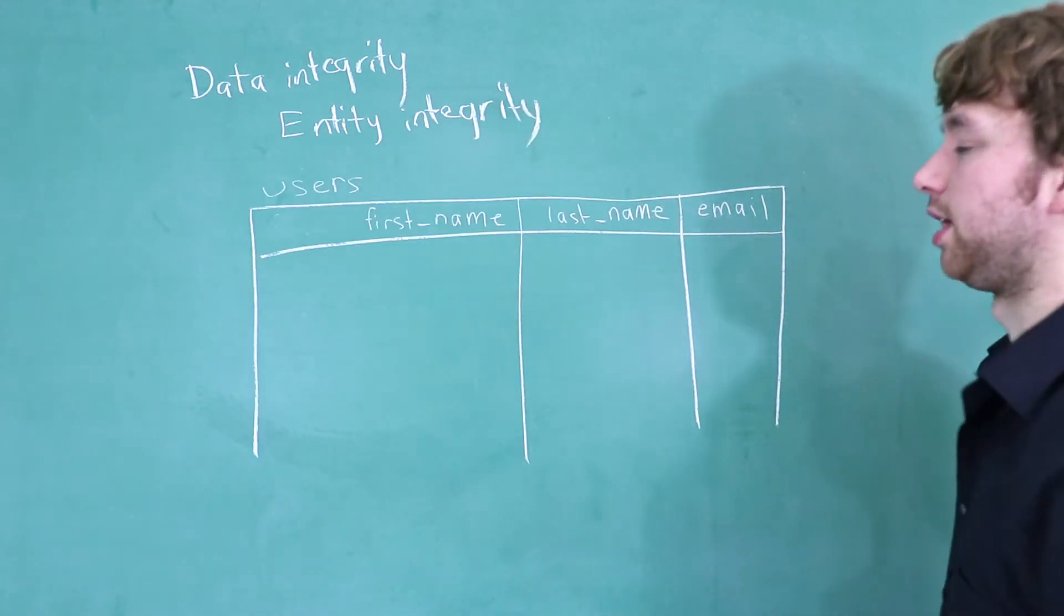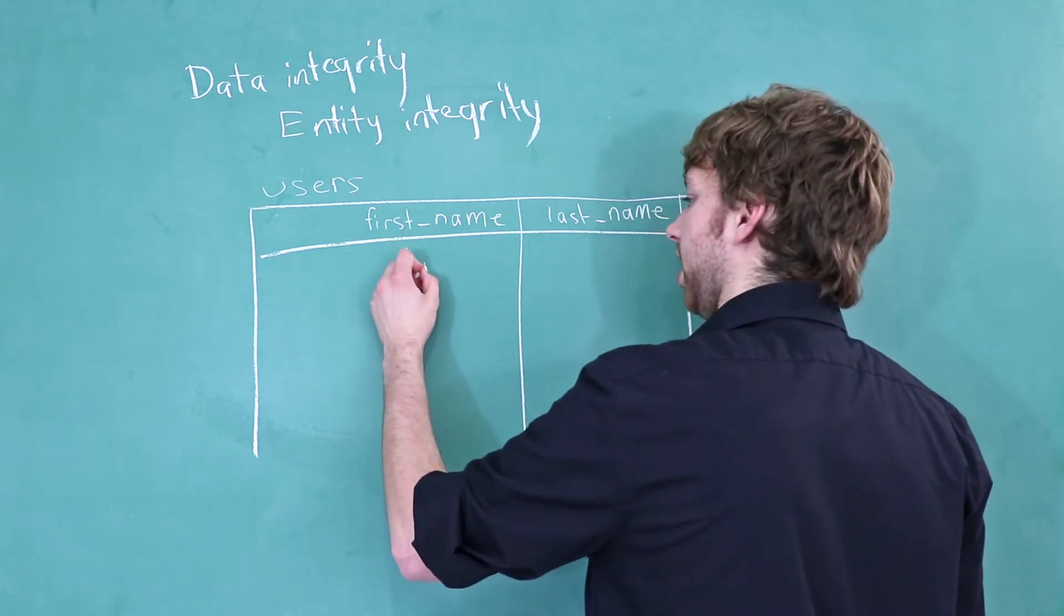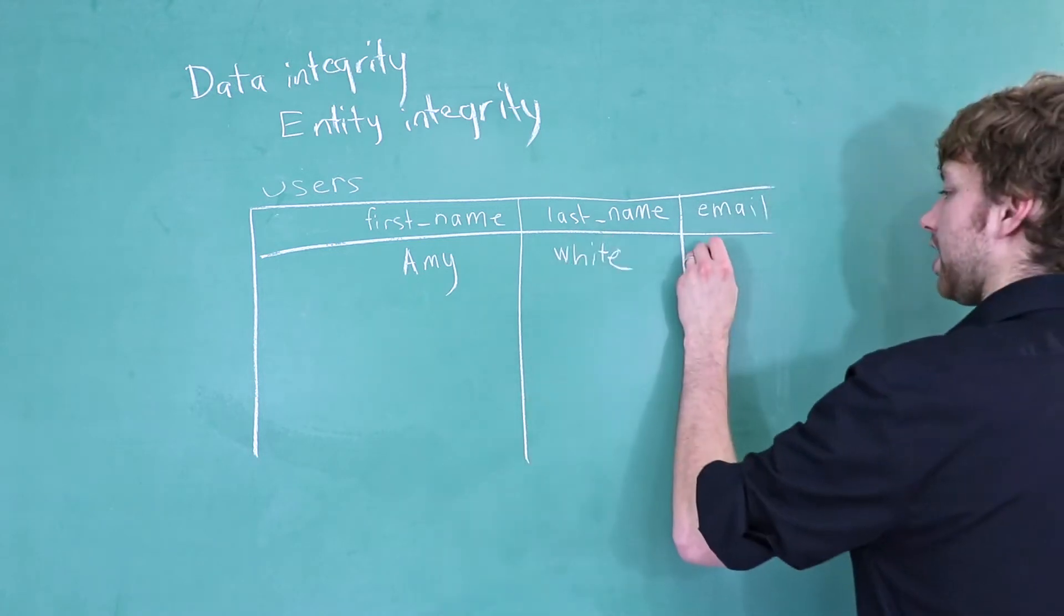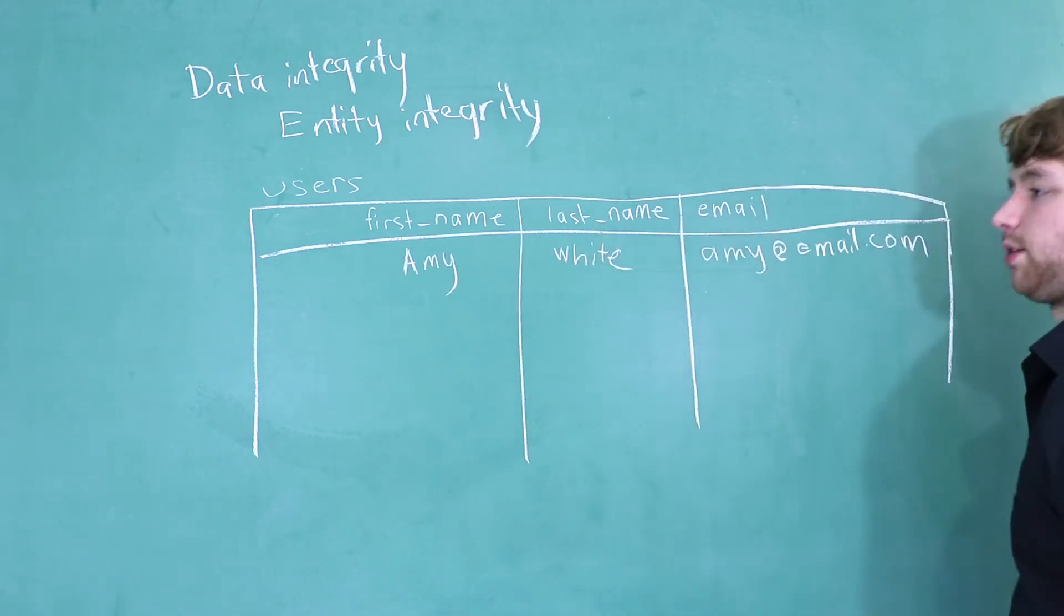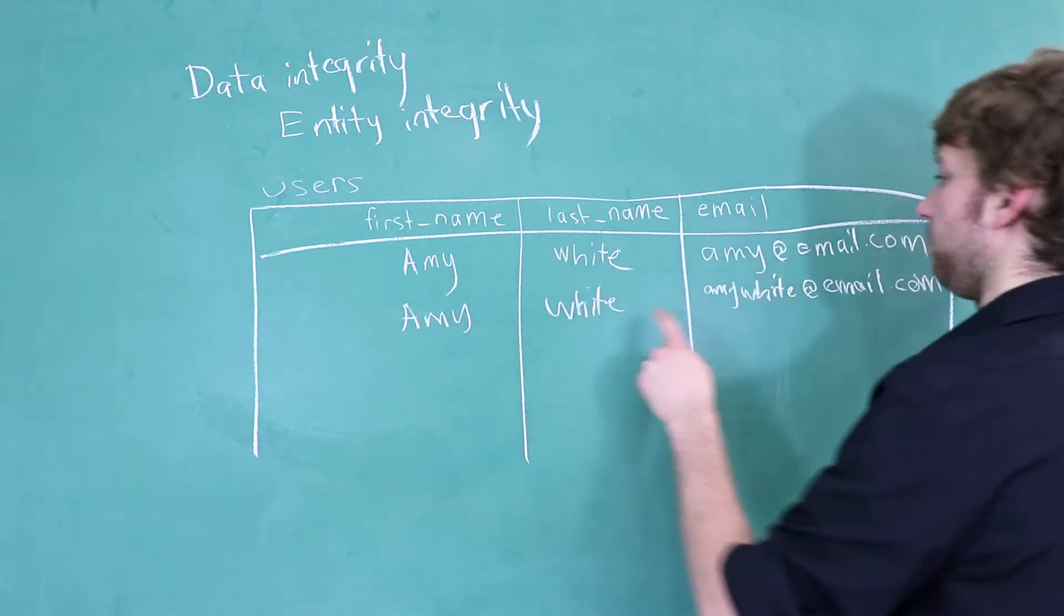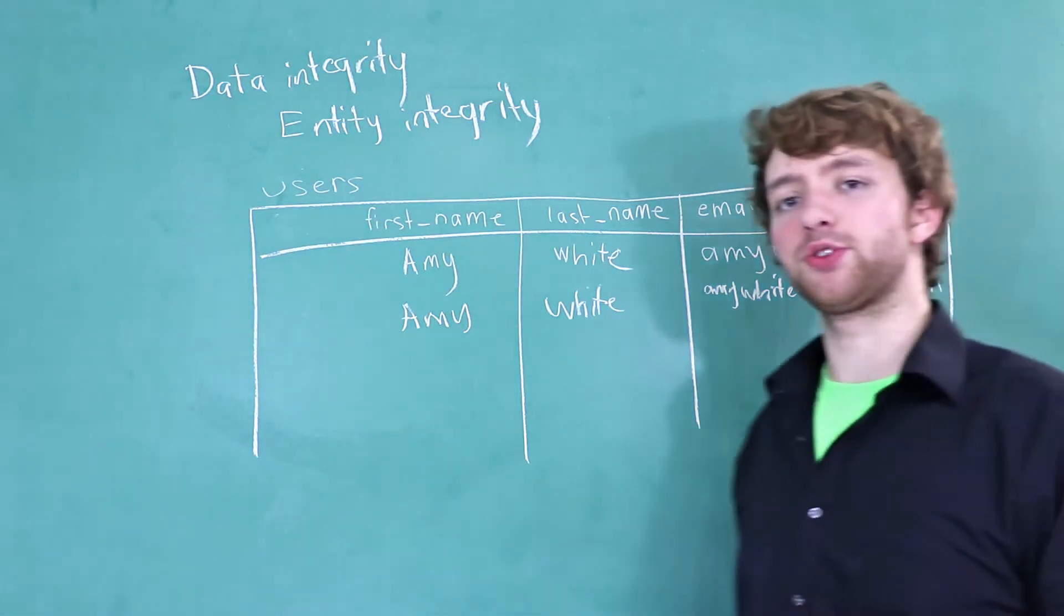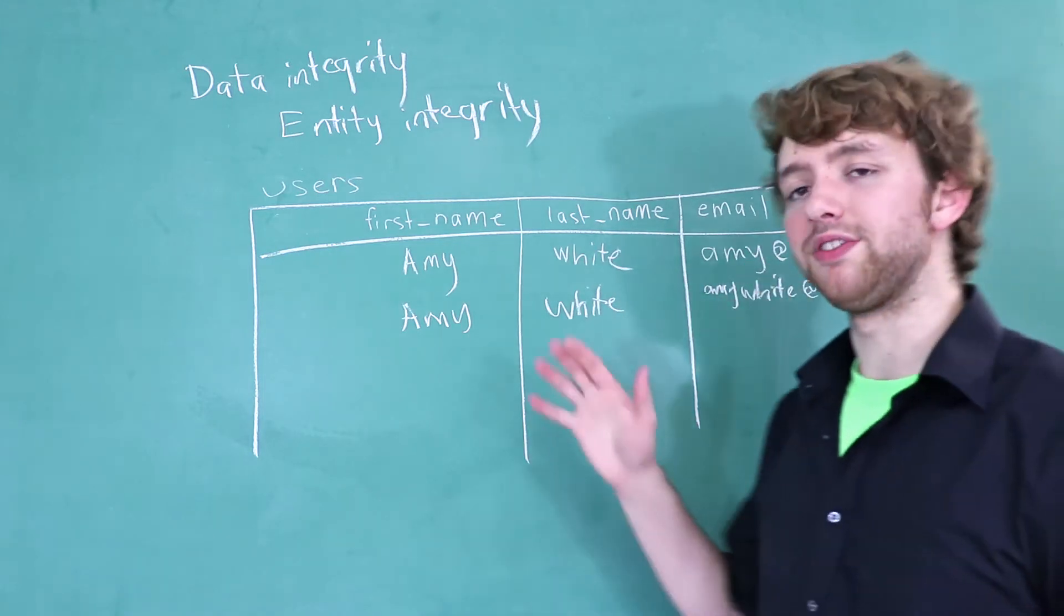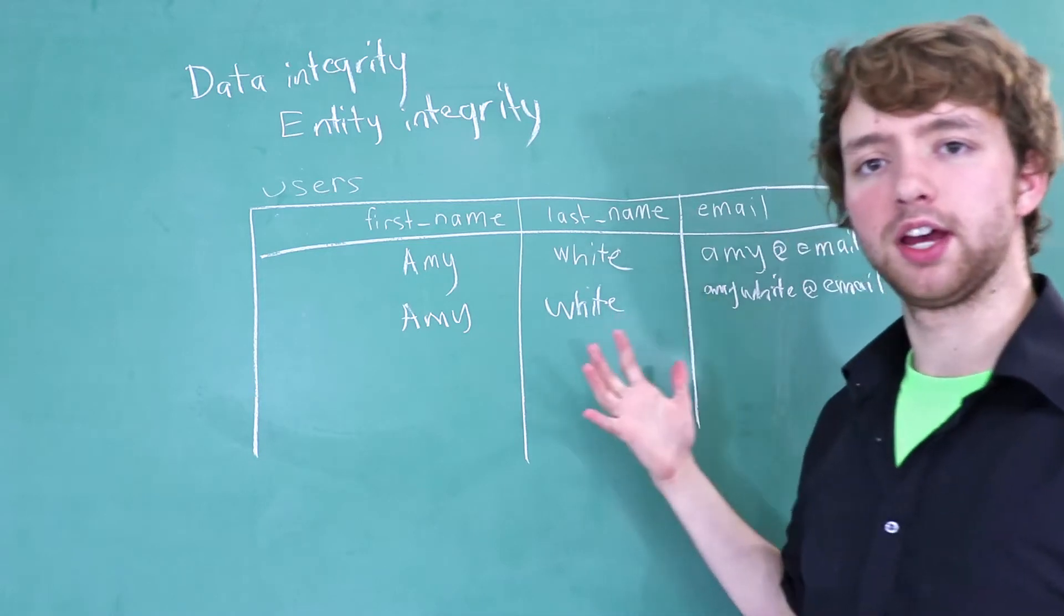First off, let me show you a bad example of a database table. Here is an example table for users. Let's throw some data in here. Let's say we have an Amy. We'll give her the last name White and we'll say her email is amy@email.com. Now let's say we have another row here and this is another Amy White with her email amywhite@email.com. This brings up the interesting question: is this the same Amy with two emails, or are these two separate Amys? In this situation, you can't really tell.